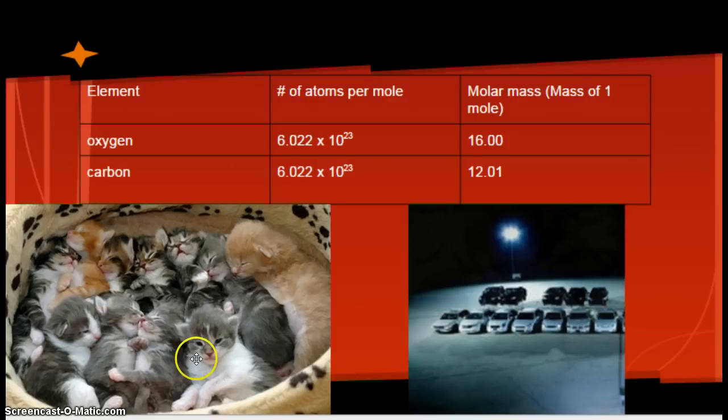Just like if I have a dozen kittens and a dozen cars, I have 12 of each. But obviously, these are much heavier. Same idea, that a mole is 6.022 times 10 to the 23rd, and a dozen is 12.